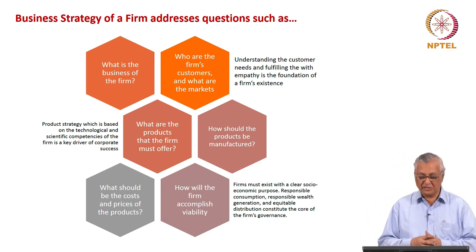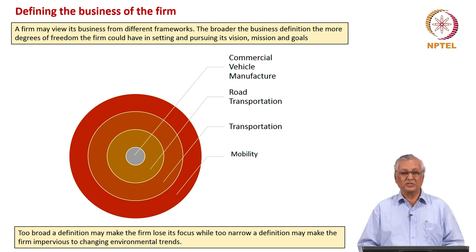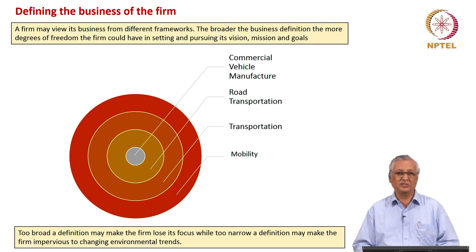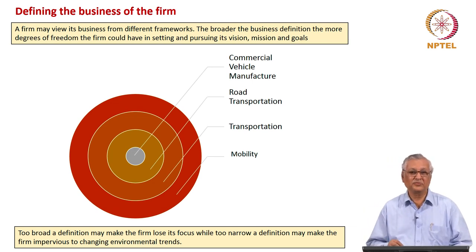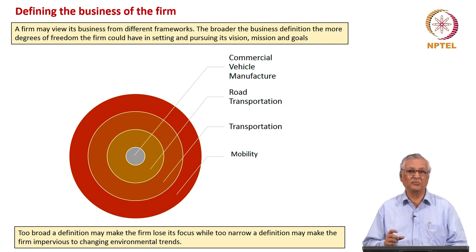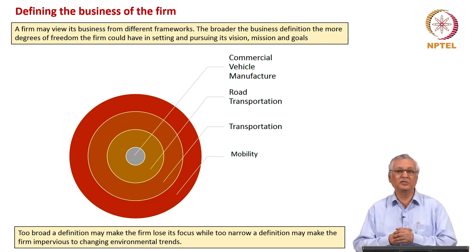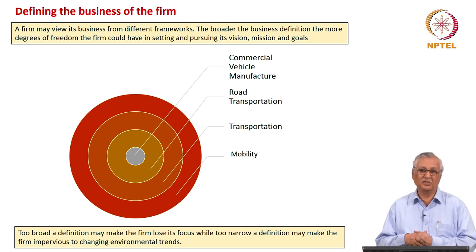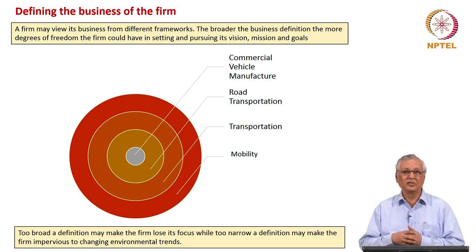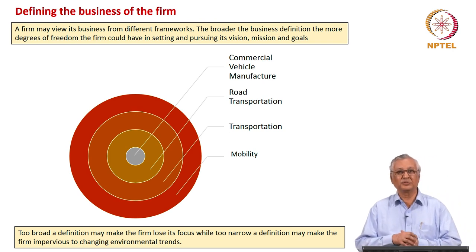Defining the business of the firm is fundamental to establishing a business strategy. In today's world where technologies are converging and diverging, defining the business can be easy or difficult. If you define your business very narrowly — almost around a product — your degrees of freedom to expand or diversify will be very limited, and you tend to get straight-jacketed into a product-dependent business model. On the other hand, if you define your business too broadly, you may be all over and would not really know which products to get into the market or which types of customers to serve.